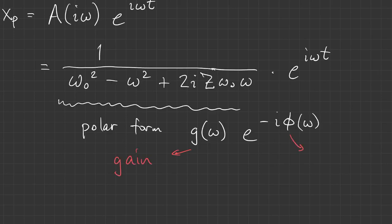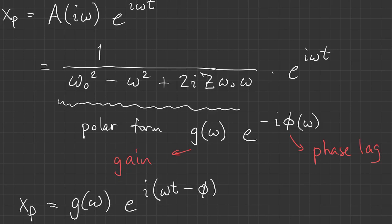G is what we would call the gain. Phi is sometimes called the phase lag. So when we write it that way, the particular solution in response to the forcing function is the gain times e to the i omega t with a phase shift of phi.